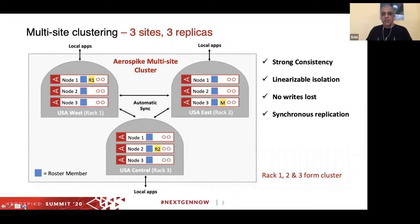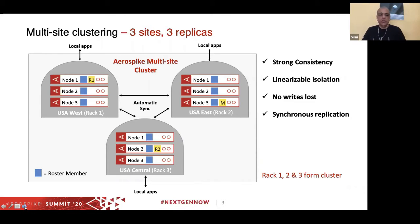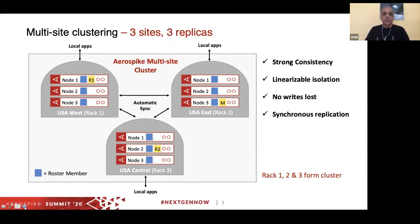I'm illustrating an example based on a single Aerospike cluster arranged as three racks distributed across three sites — which could be data centers, cloud regions, or even different cloud providers like Amazon, Google, or Azure. You can now run a single cluster across these in multiple racks. For simplicity, I've shown three sites with three racks, one rack per site and three replicas. We support strong consistency with linearizable isolation and no writes are lost, achieved by synchronous replication with a two-phase commit-like algorithm.